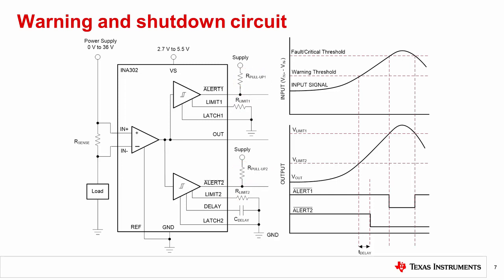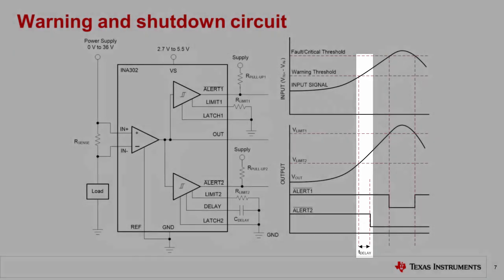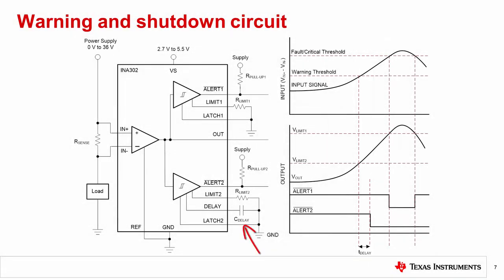In the example shown, alert 2 will go low once load current exceeds the warning threshold, and alert 1 will go low once load current exceeds the critical threshold. Notice that a time delay is implemented on alert 2 by connecting an external capacitance to the delay pin.